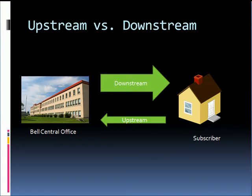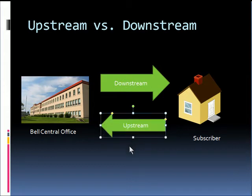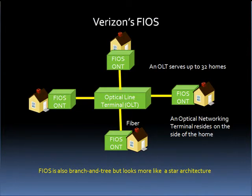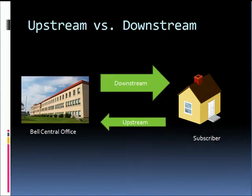Historically, cable TV systems have been better adept at providing downstream bandwidth than upstream bandwidth. We describe the upstream portion of the bandwidth as getting larger and, therefore, the systems getting closer to symmetry as cable systems migrate to the new standard called DOCSIS 3.0. Although both cable systems and Verizon's FIOS system have better ability to serve downstream bandwidth than upstream, Verizon's FIOS architecture is much closer to providing symmetrical bandwidth levels and is often referred to as a star architecture compared to the cable system, which is described more as a branch and tree.